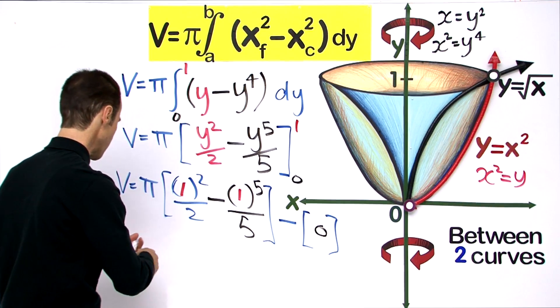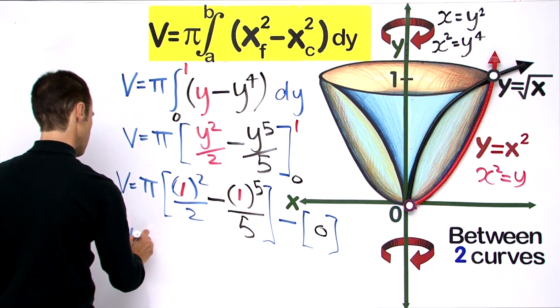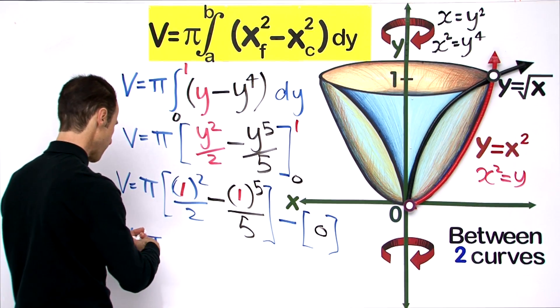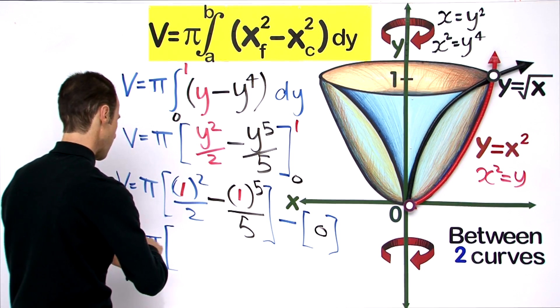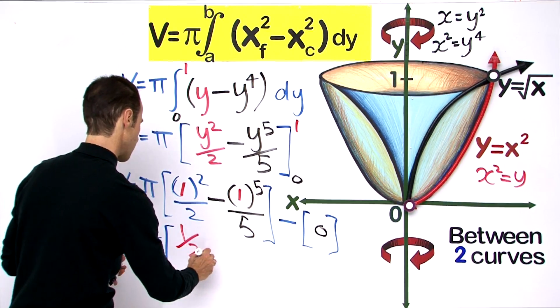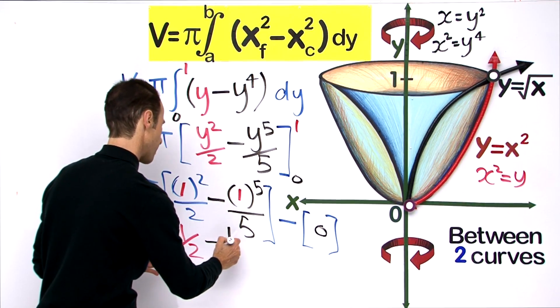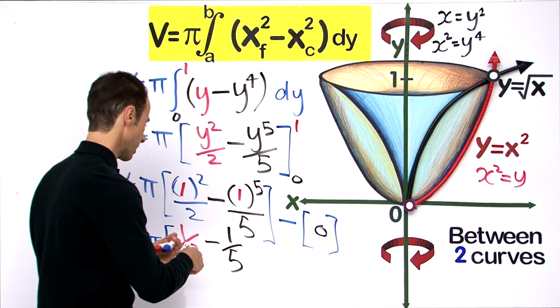Let us further simplify: v equals pi times 1 half minus 1 fifth.